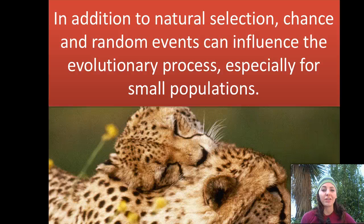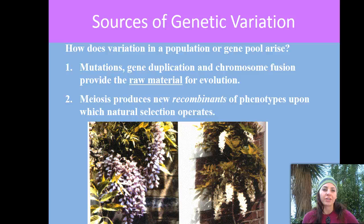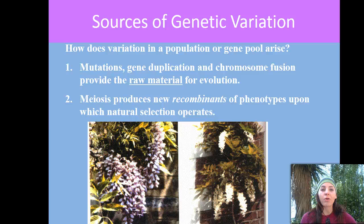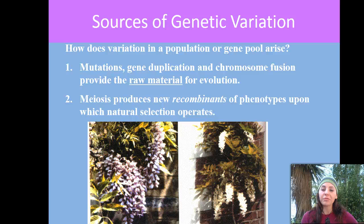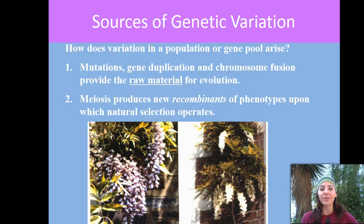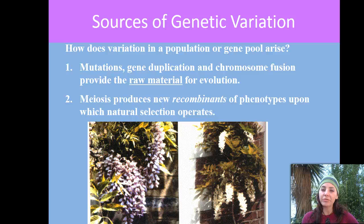So what are the sources of genetic variation, and how does variation in a population or gene pool arise? Mutations occur, and gene duplication and chromosome fusion provide the raw material for evolution. Meiosis produces new recombinations of phenotypes upon which natural selection operates. Meiosis is sexual reproduction, and its whole purpose is to produce genetic variation. Phenotypes, if you recall, are what something looks like — what's observed or the appearance.